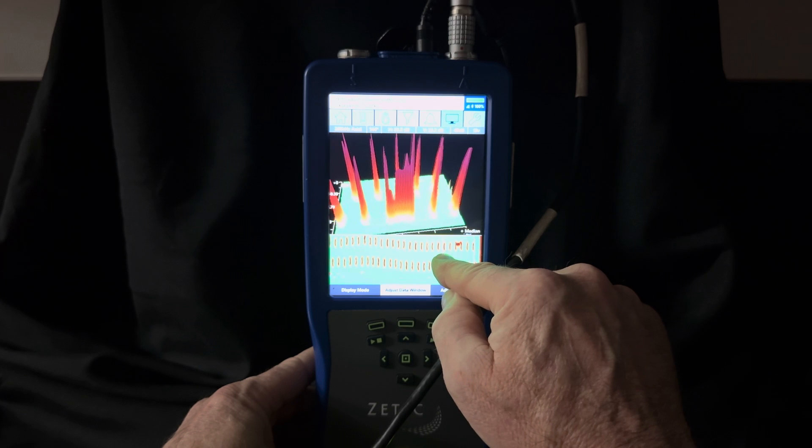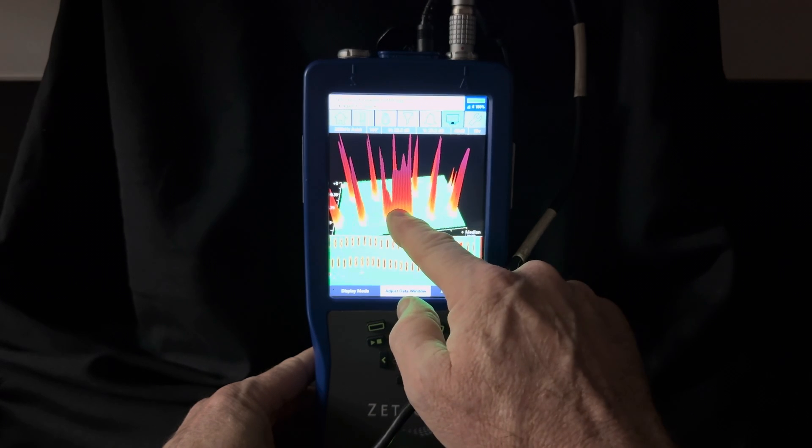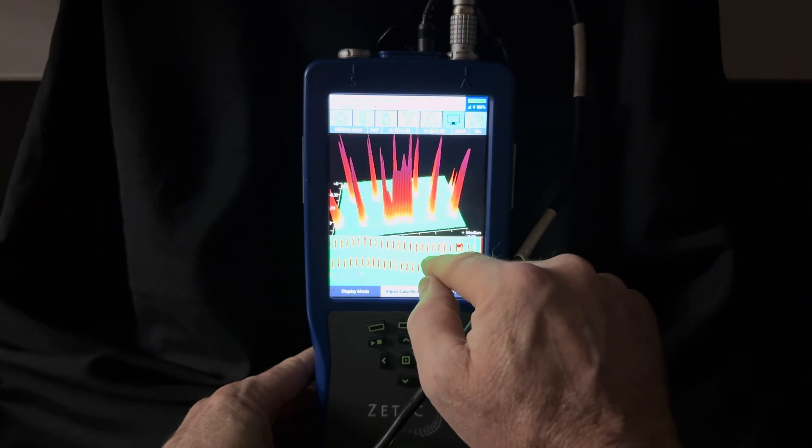But keep on going and keep your eye out for something that looks different. Does that look different? It should, because you have a full-length crack between two rivets.